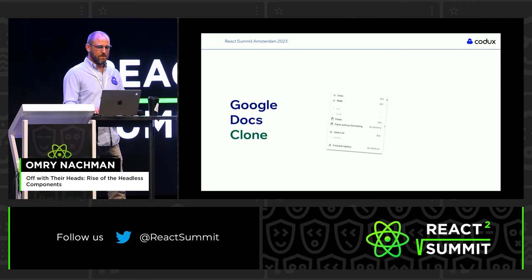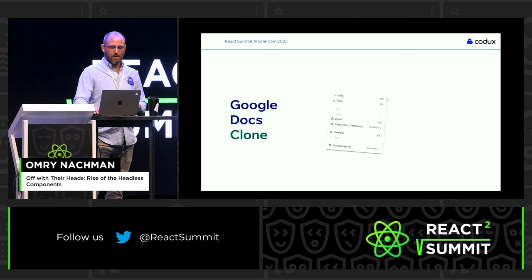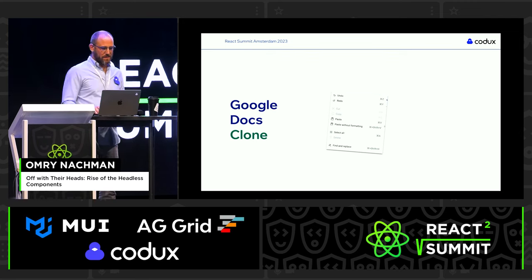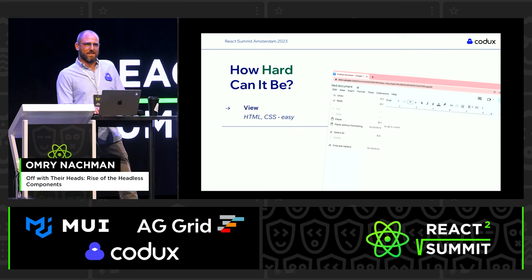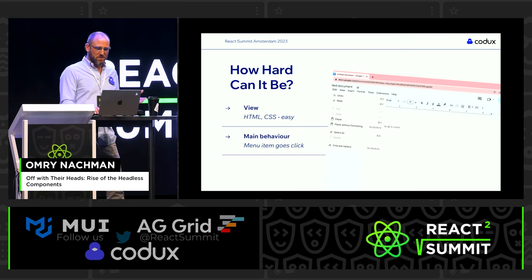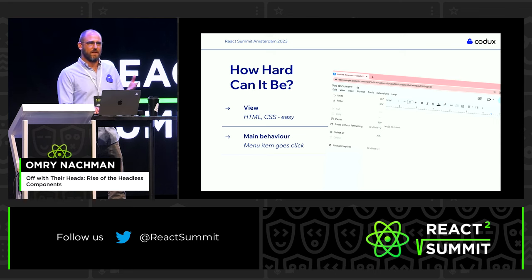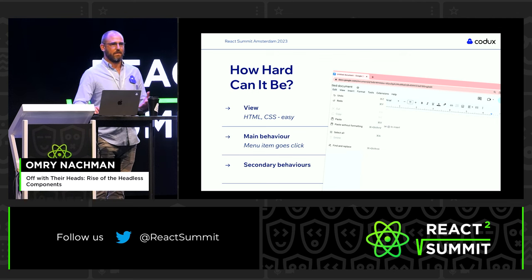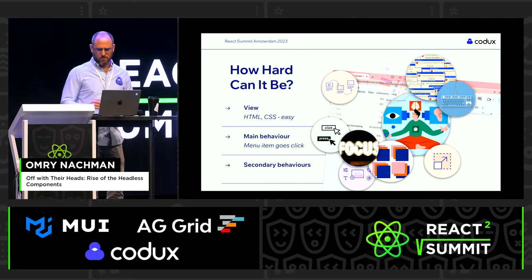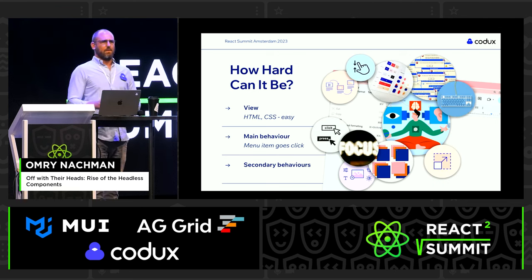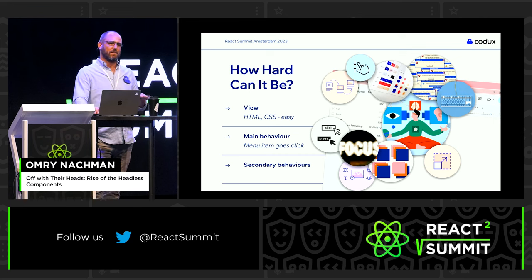In that work, there is this menu thing. It's a pretty basic menu, and if we're feeling very naive, we might say something like 'how hard can it be?' The HTML and CSS is trivial. It has open and closed state, a bunch of items, items go click — the end. Except for some secondary behaviors like z-indexing, accessibility, resizing, pinching, scrolling, focus, keyboard navigation. It's actually a lot of work, and this is not even stuff that's on the spec — this is just stuff we need to do to ship a quality product.